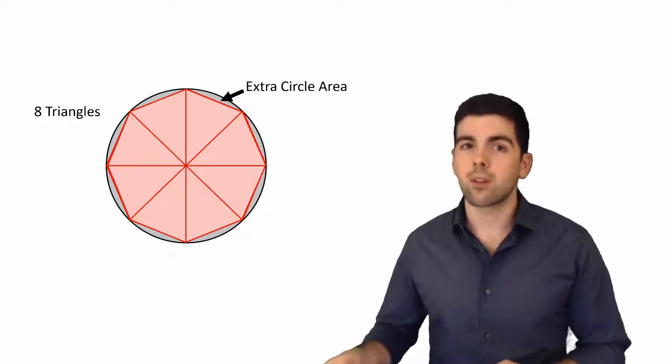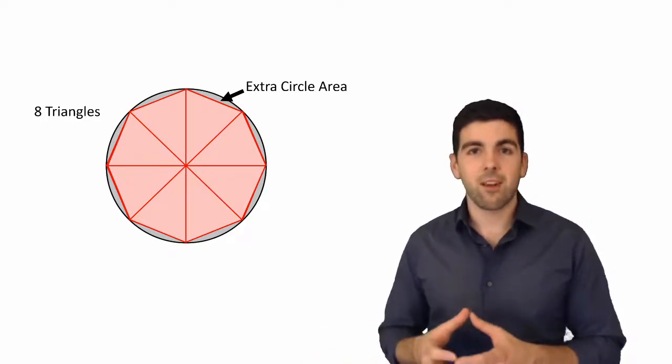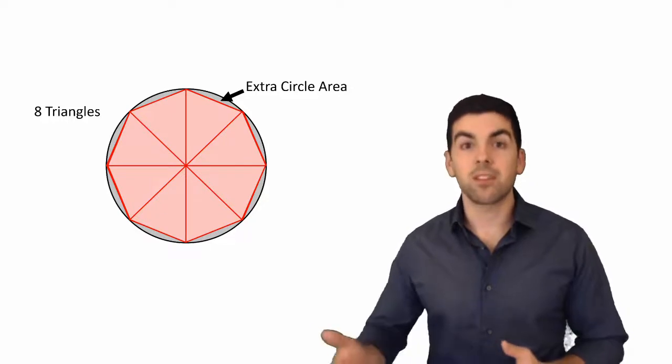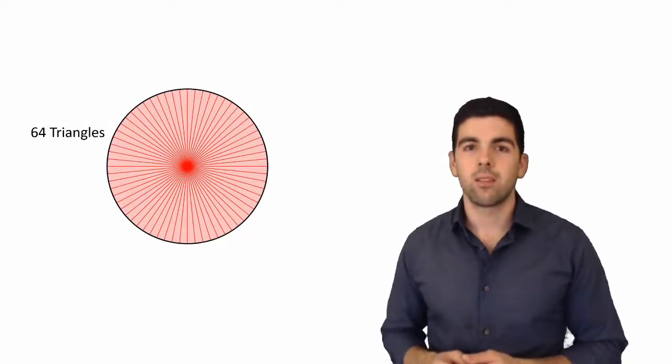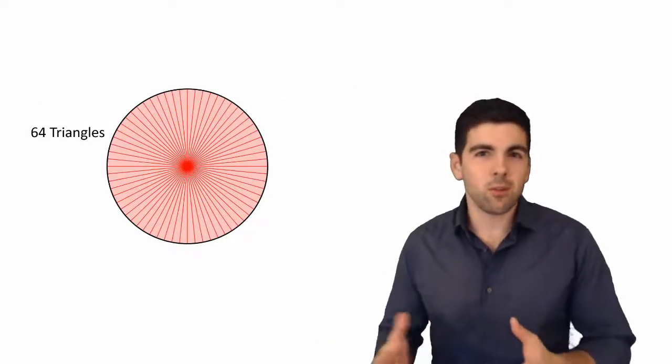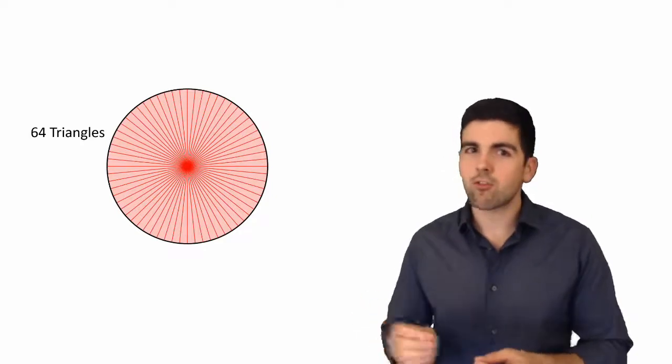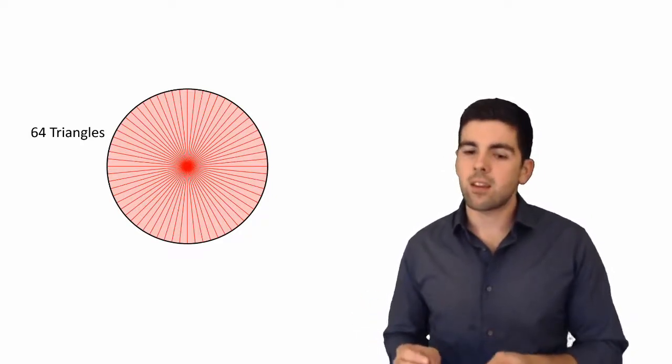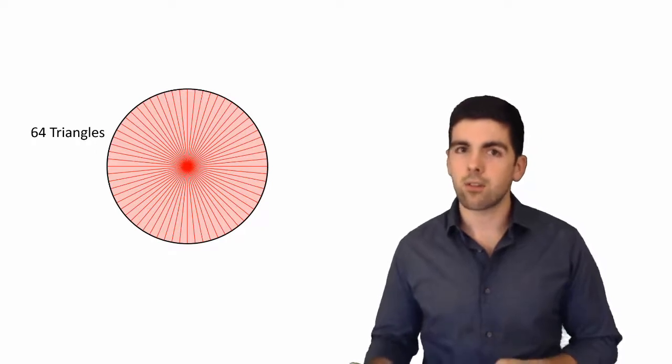Now what if we go a step further? If we go a step further and instead of having eight triangles we have say 64, then you have a similar concept. You still have a bunch of small triangles making up your circle. But now you can see the area is getting even closer to the area of the circle.